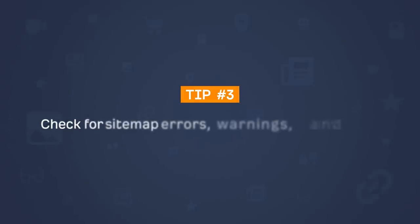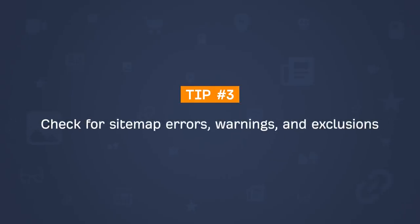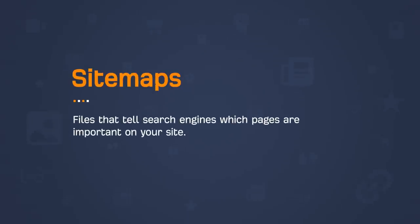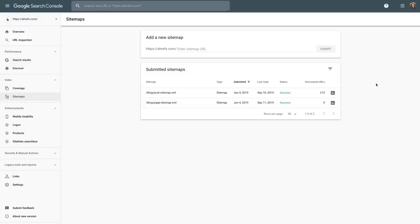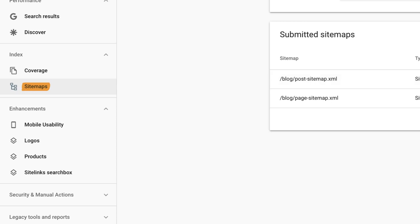The next tip is to check for sitemap errors, warnings, and exclusions. Sitemaps are files that tell search engines which pages are important on your site and help crawlers crawl more efficiently. If you have issues with your sitemap, you could be confusing crawlers, leading to wasted time and resources on their end. To see if you have any issues, go to the Sitemaps report, then click on the icon beside the sitemap you want to investigate.